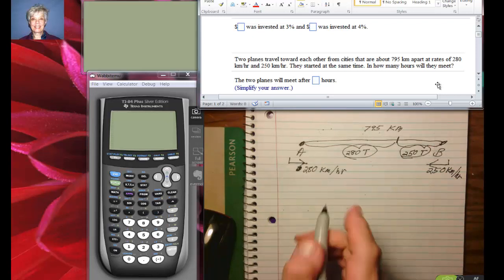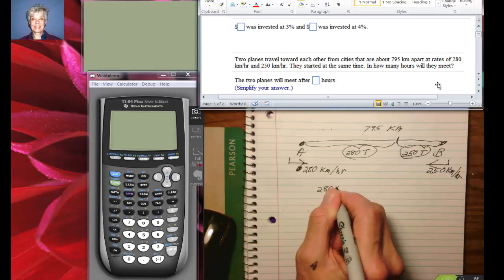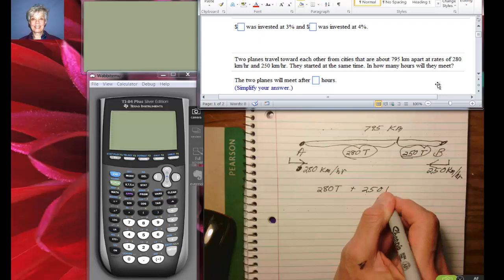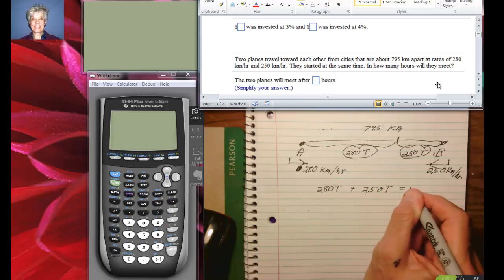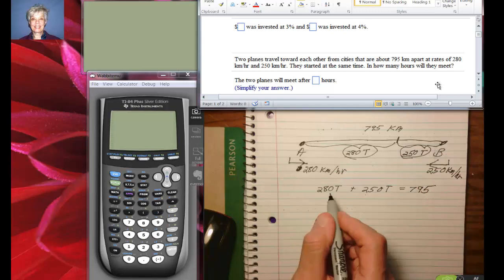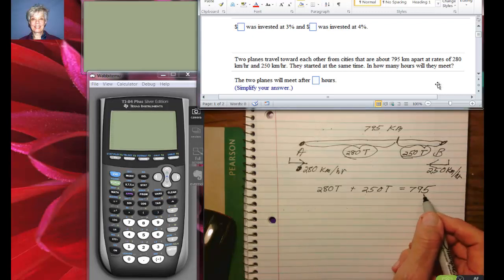So let's add these together. We're going to have 0, and 8 plus 5 is 13, carry the 1, and 2 plus 2 is 4, and 1 is 5.